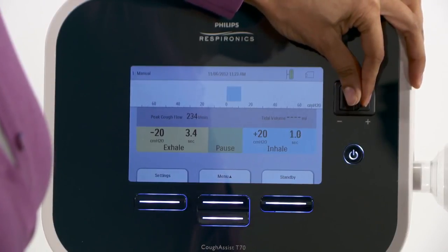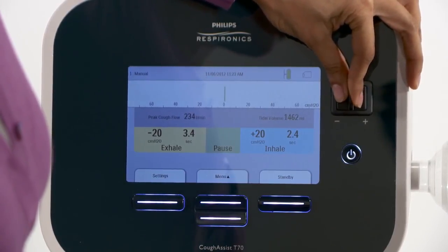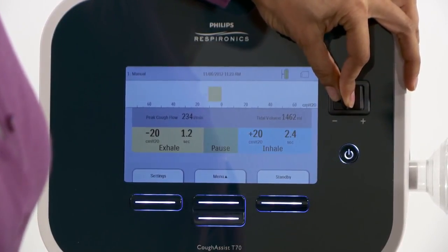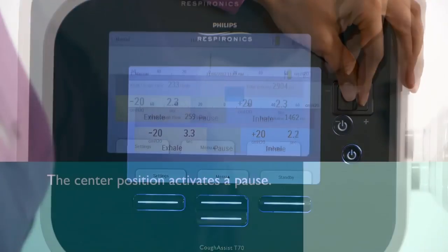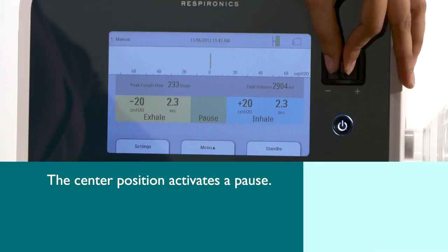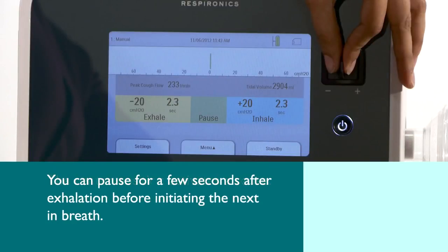When providing a treatment in the manual mode, you can see how long you are delivering the inspiratory pressure and how long you are delivering the exhaled pressure on the screen. The center position on the lever activates a pause. Depending on patient preference, you can pause for a few seconds after exhalation before initiating the next in-breath.